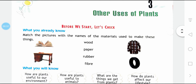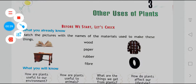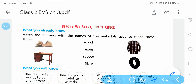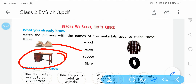Here you can see some things — you can match the material with which things are made. First, here is a book or a copy — what material is it made of? Paper. Here is a table — what is it made of? Wood. Here is a rubber — what is it made of? It comes from a tire.